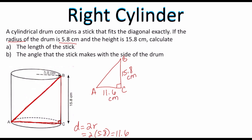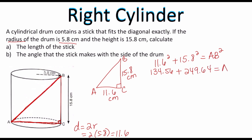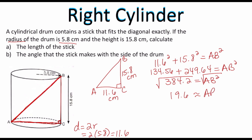Be careful with units — we haven't encountered problems where units are different yet, but you have to be cautious that you're always working with the same units; otherwise you'll need to convert. Let's use the Pythagorean theorem since we have a right triangle: 11.6 squared plus 15.8 squared equals AB squared. 11.6 squared is 134.56, and 15.8 squared is 249.64. Adding those gives 384.2 equals AB squared. Taking the square root, AB is approximately 19.6 centimeters — that's the length of the stick.